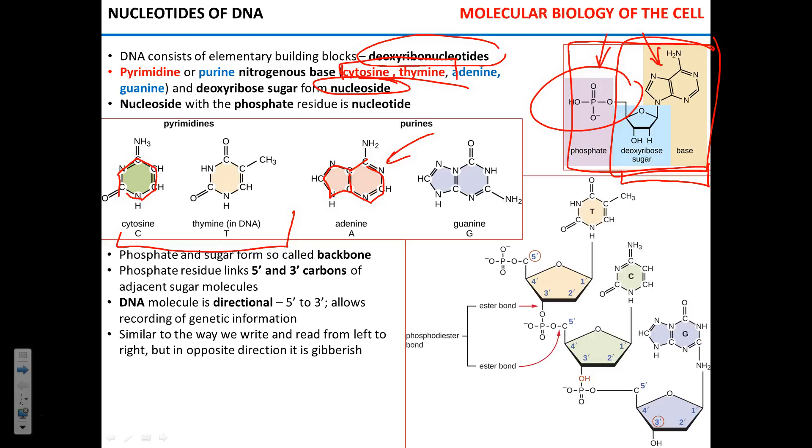So if you take any nucleotide, any building block of the DNA and compare it to any other, phosphate residue and deoxyribose residue are going to be the same. Nitrogenous basis is what makes them different. Now that these common elements, phosphate and deoxyribose, form what we call a sugar phosphate backbone of a DNA molecule. It's pretty much an official term, a backbone. So they form like a basic structure.